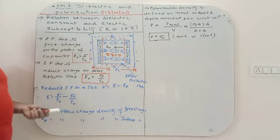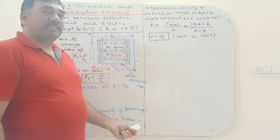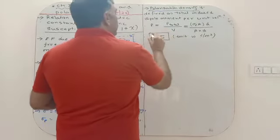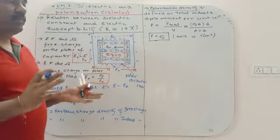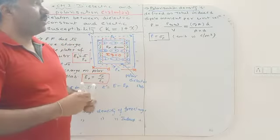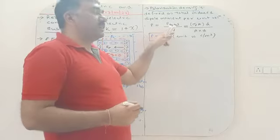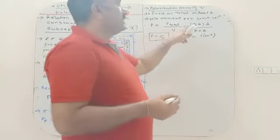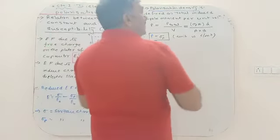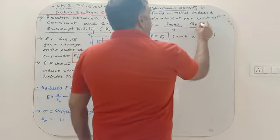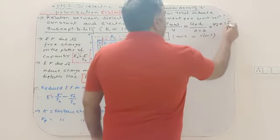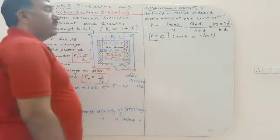Now we define polarization density P, represented by capital P. The total induced dipole moment per unit volume of a dielectric slab is known as polarization density. P = Q_p × d / (A × d) = Q_p / A = σₚ (induced surface charge density). Its unit is coulomb per meter squared.